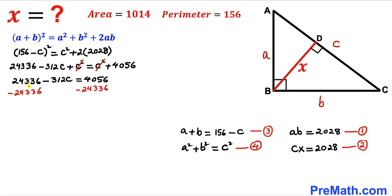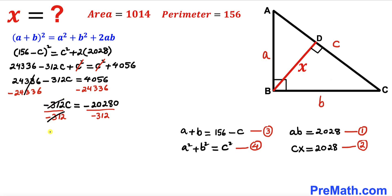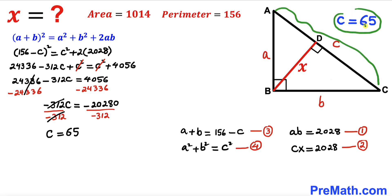Subtracting 24336 from both sides gives negative 312c equals negative 20280. Dividing both sides by negative 312 isolates c, giving us c equals 65 units. So the side length AC is 65 units.